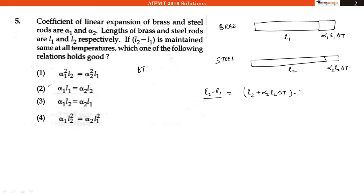And if we compare both, L2 minus L1 are same from both sides, it will get cancelled out and we will have alpha 2 L2 delta T is equal to alpha 1 L1 delta T.